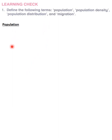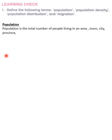Population is the total number of people living in an area — a town, city, province, country, or the world. So population can refer to the people of an area, a town, a city, a province, a country, or the entire world.